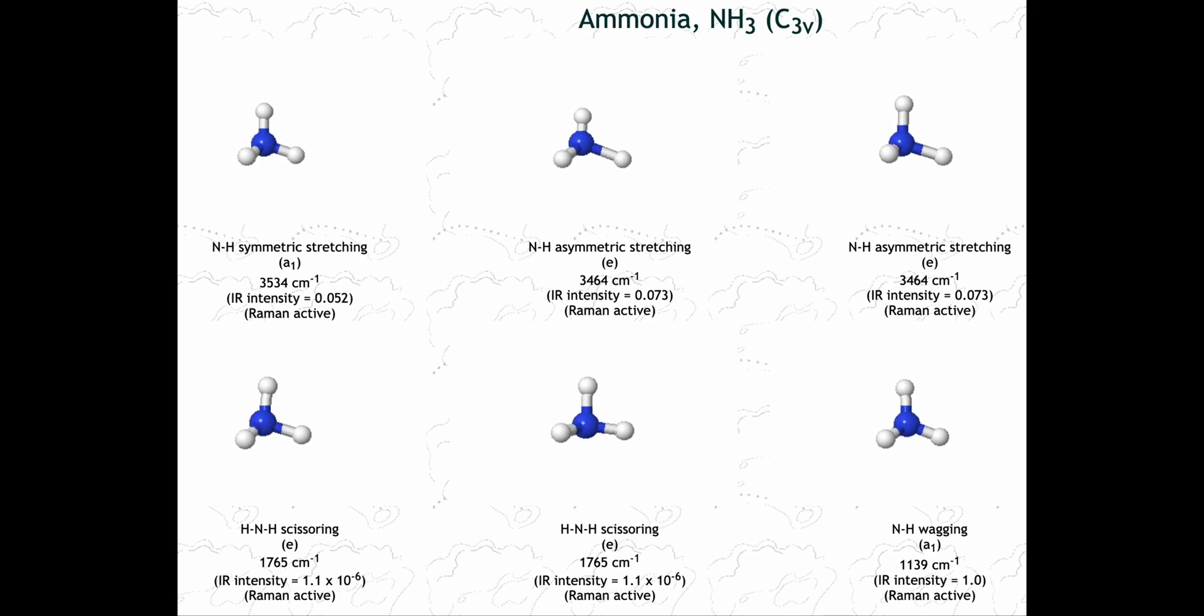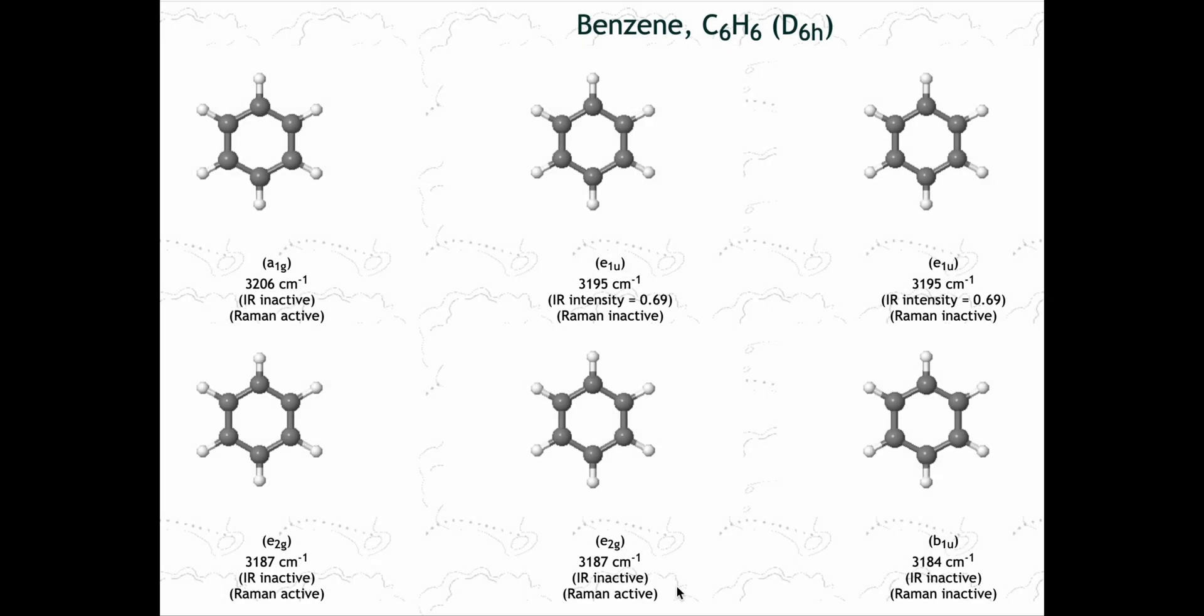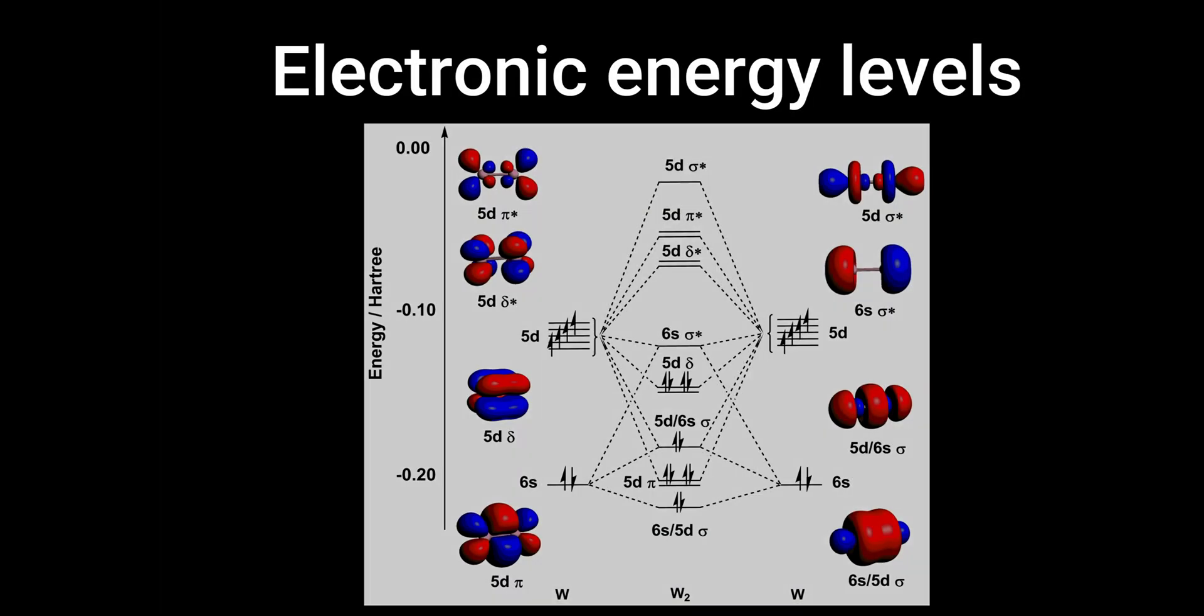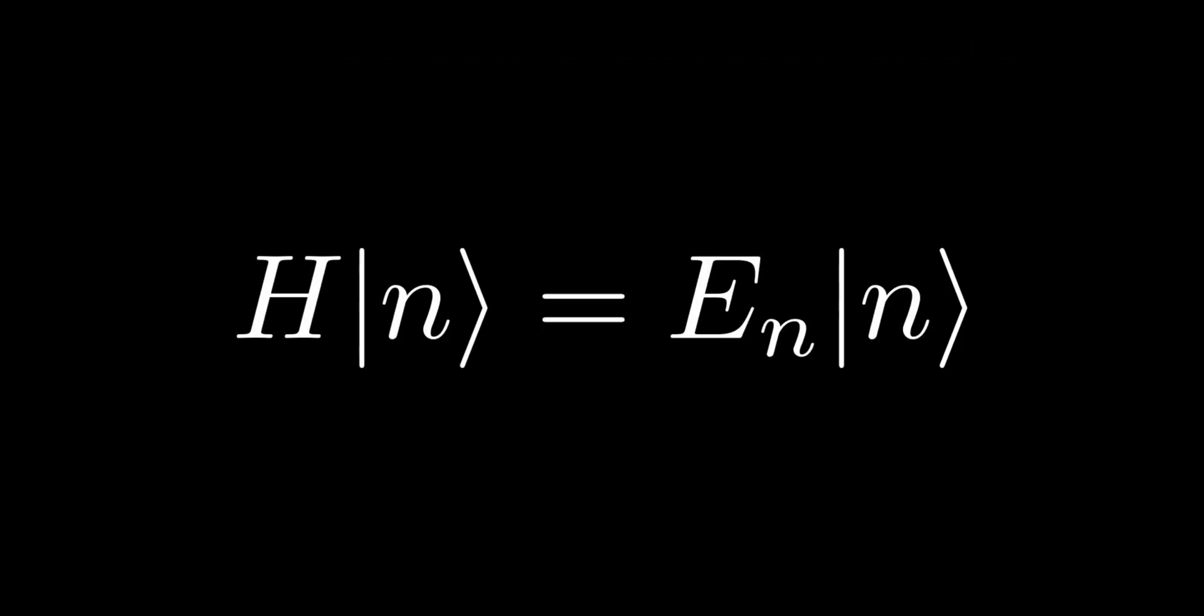On the molecular scale, the energy of both motions is quantized, meaning they exist only in specific levels, unlike in classical physics. To determine these energy levels and the corresponding quantum states of the molecule, we need to solve the Schrodinger equation.